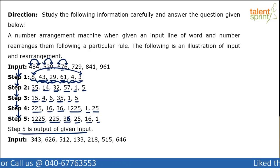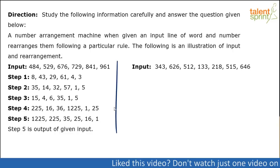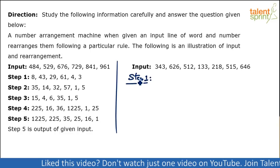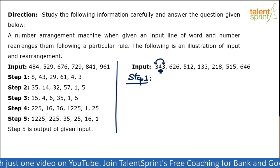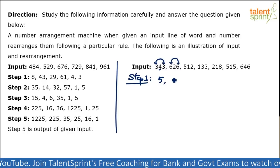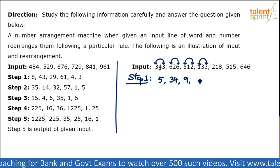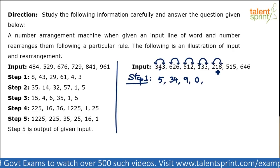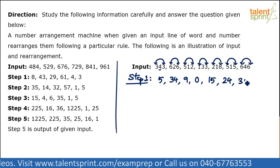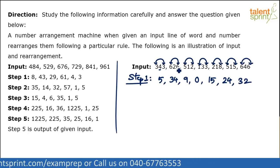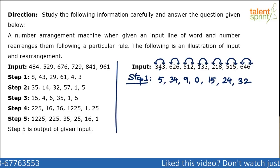Now let's apply the same process to the given input. For step 1: 3 × 3 = 9, minus 4 gives 5. 6 × 6 = 36, minus 2 gives 34. 5 × 2 = 10, minus 1 gives 9. 1 × 3 = 3, minus 3 gives 0. 2 × 8 = 16, minus 1 gives 15. 5 × 5 = 25, minus 1 gives 24. And 6 × 6 = 36, minus 4 gives 32. So step 1 gives: 5, 34, 9, 0, 15, 24, 32.